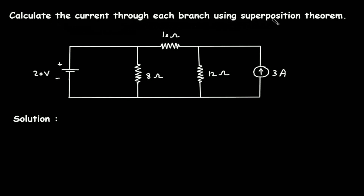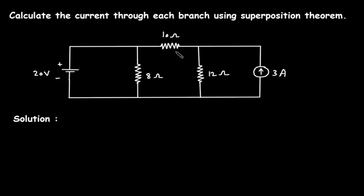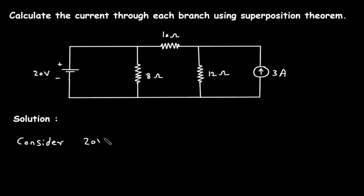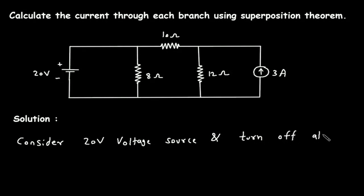Calculate the current through each branch using superposition theorem. We have to find current through the 8 ohm, 10 ohm, and 12 ohm resistors using superposition theorem. First, we will consider the 20 volt voltage source and turn off all other sources.